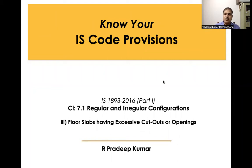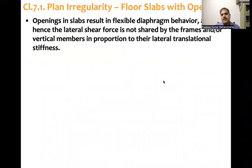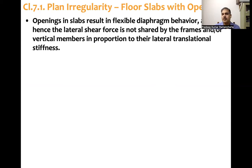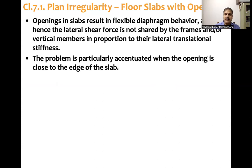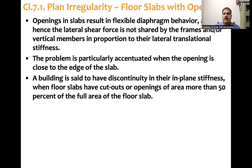Floor slabs having excessive cutouts or openings — what the code says is: openings in slabs result in flexible diaphragm behavior, and hence the lateral shear force is not shared by the frames and/or vertical members in proportion to their lateral translational stiffness. This problem is particularly accentuated when the opening is close to the edge of the slab. A building is said to have discontinuity in their in-plane stiffness when floor slabs have cutouts or openings of area more than 50 percent of the total area.